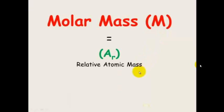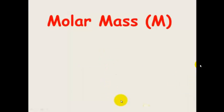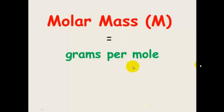The molar mass is equal to the relative atomic mass or the relative formula mass — the numbers you find on the periodic table, which are the same as the mass numbers. So molar mass you can work out just by looking at these mass numbers. Because it's the same as the relative atomic mass for one atom, or the relative molecular or formula mass if it's a compound. Molar mass unit-wise equals grams per mole — it's how many grams one mole weighs.